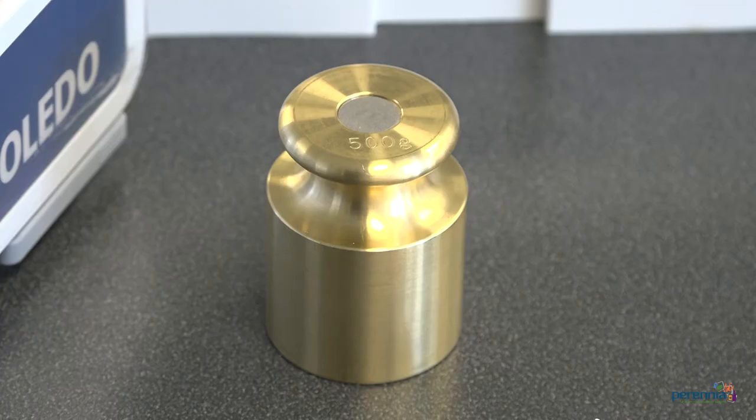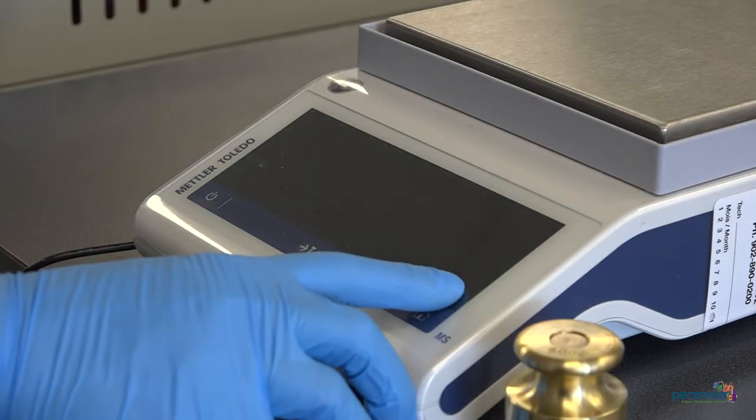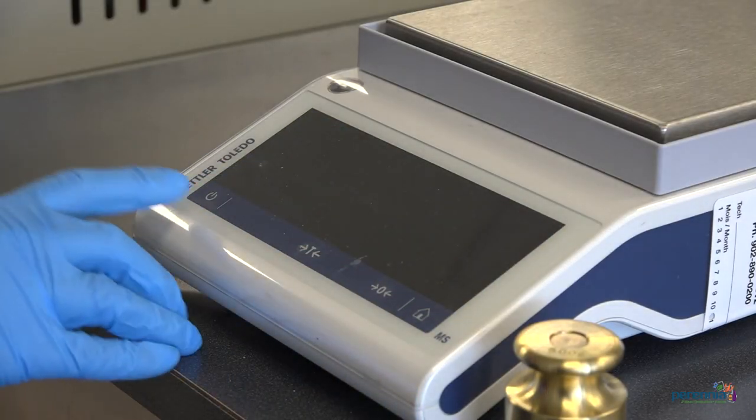The first thing we are going to do is grab our certified known test weight. Step 1: power down the scale and power it back up.